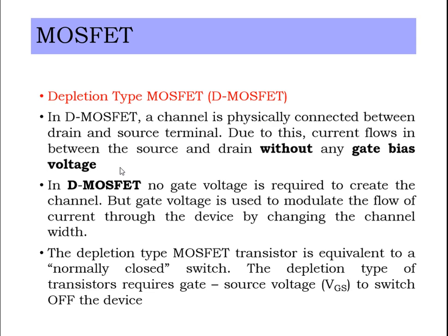This Depletion Type MOSFET is normally a closed switch — it is called an ON device. It requires a gate-source voltage in order to switch off the device; by biasing the gate, we control the flow of drain current.